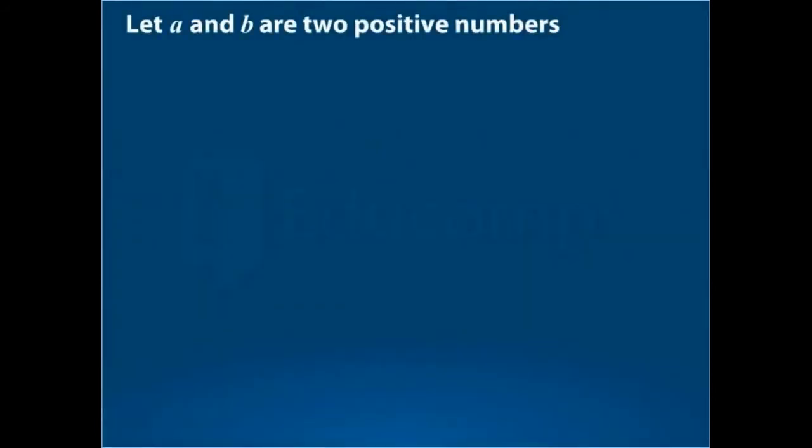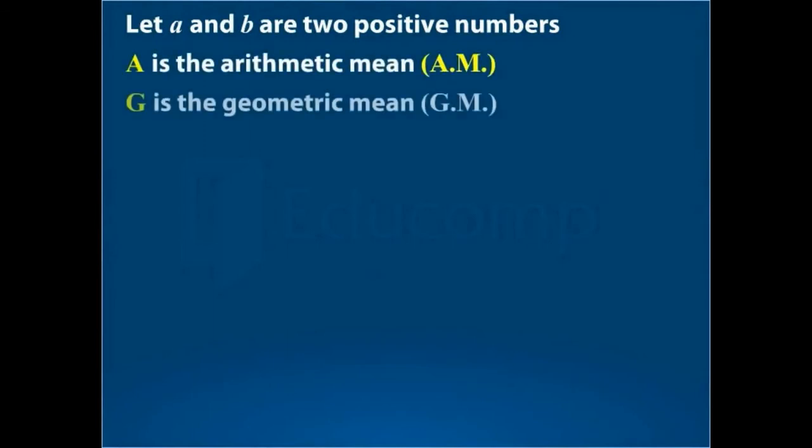Let A and B be two positive numbers. Let A be the arithmetic mean and G be the geometric mean of these numbers.